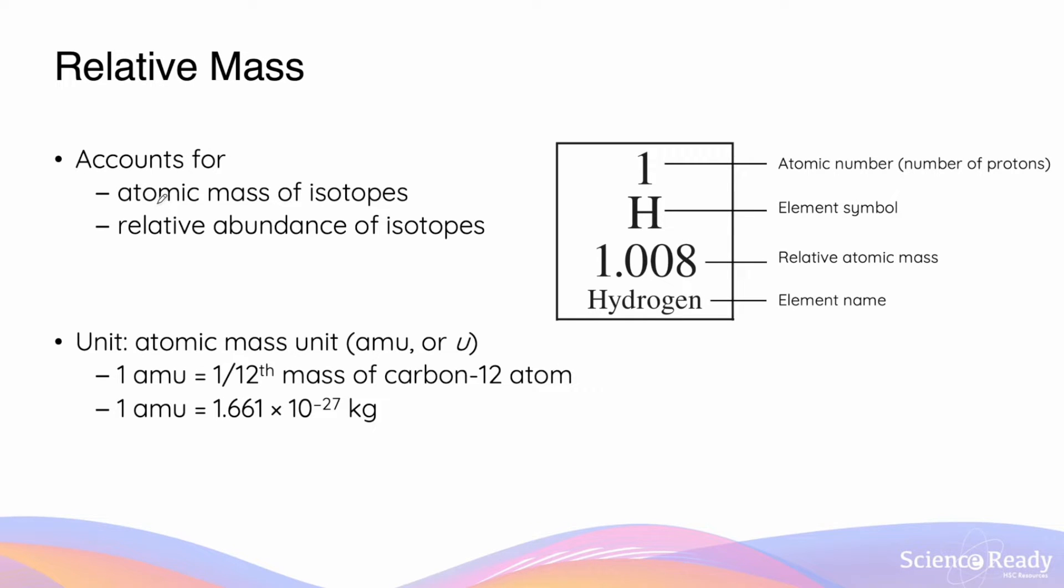Relative atomic mass accounts for the various atomic mass of the isotopes of a particular element. It's important to not get confused between relative atomic mass and average atomic mass. Technically, it's incorrect to say that relative atomic mass is the average of the atomic mass of all the isotopes, because relative atomic mass actually considers the relative abundance of the different isotopes of an element.